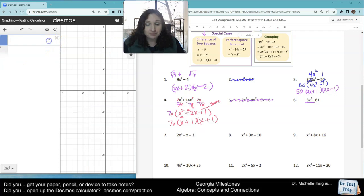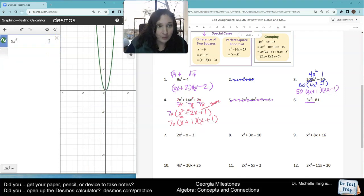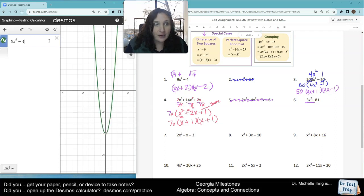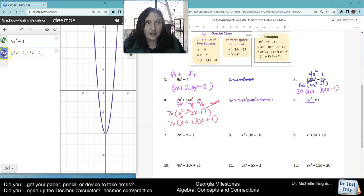If we look at number one, I've got 9x squared minus 4. Then I'm going to check my work. 3x plus 2. 3x minus 2. Same picture. If I had the purple, the green's right there. So it works.